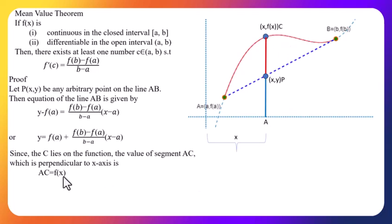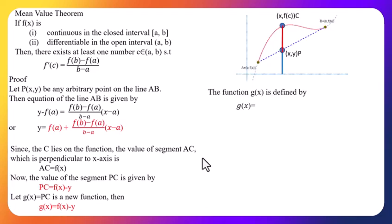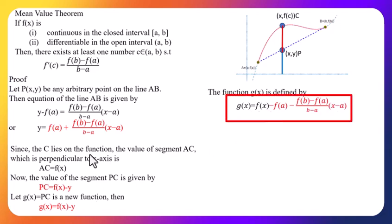Here c ∈ (a, b). The function g(x) is defined by: since the C lies on the function, the value of segment AC which is perpendicular to x-axis, the value of segment PC is given by PC = f(x) - y. f(x) is AC distance and y is AB distance. This PC line, we define as new function g(x). We define function g(x) as f(x) - y.